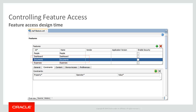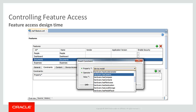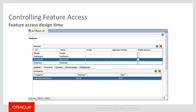From here, I select the feature, and in the constraints tab, I click the green plus sign to create a new constraint. In the resulting dialog, I can select the property — in this case, hardware.hasCamera. I also define an operator and a value. So in this case, the document feature will only be available if the hardware has a camera. Note that you can define a number of constraints, and they will be ANDed together.